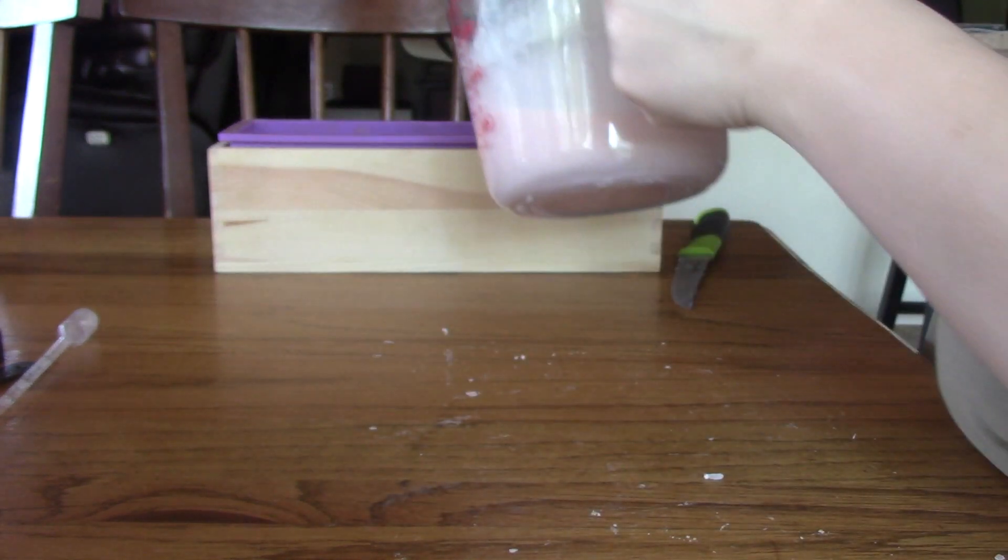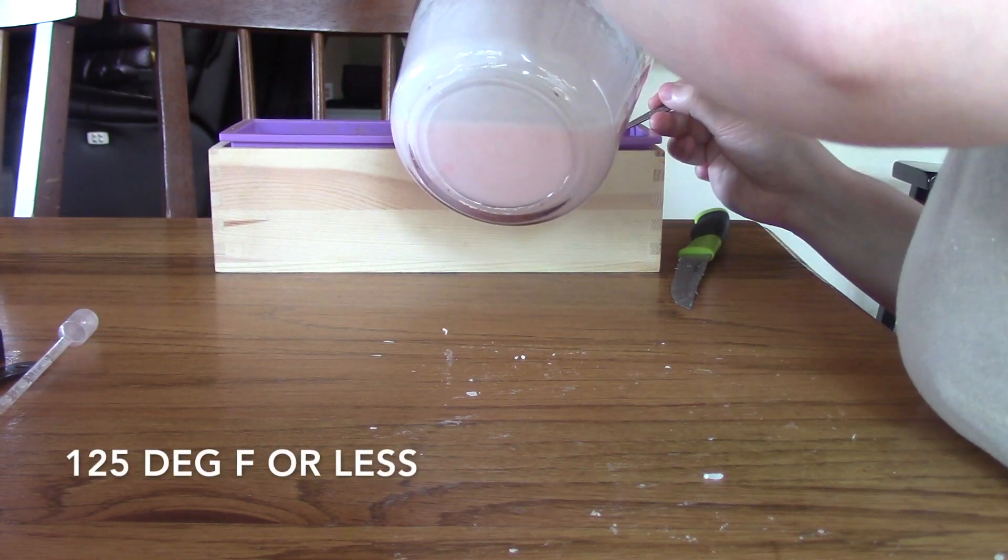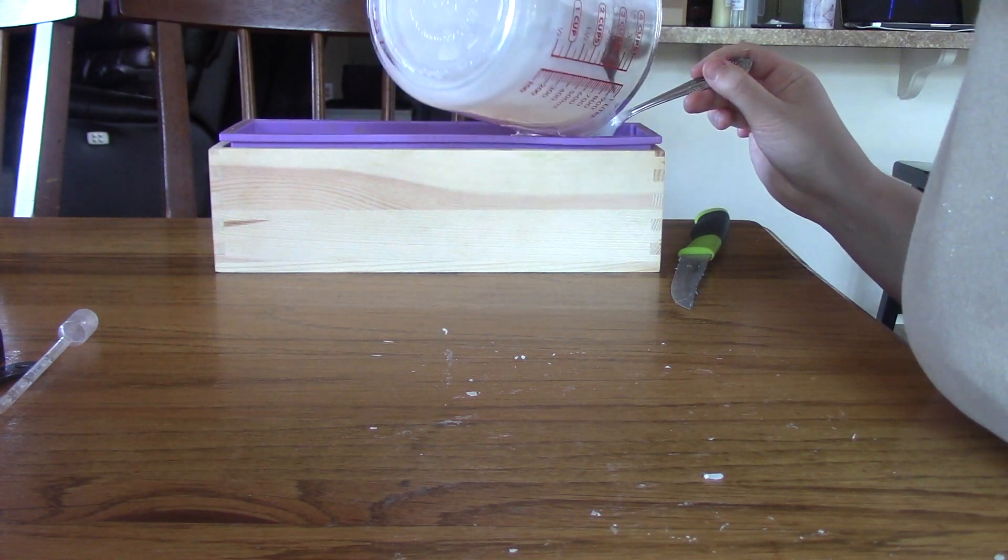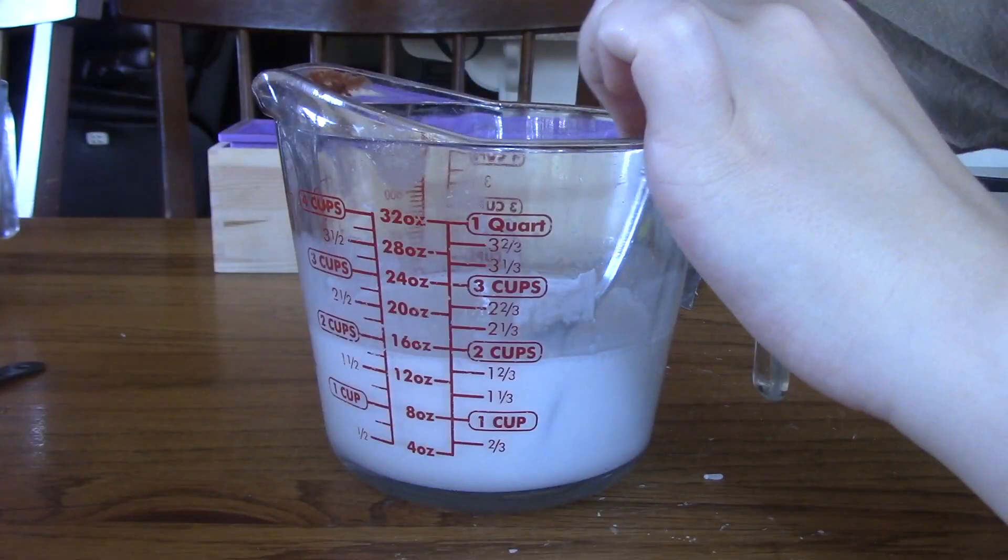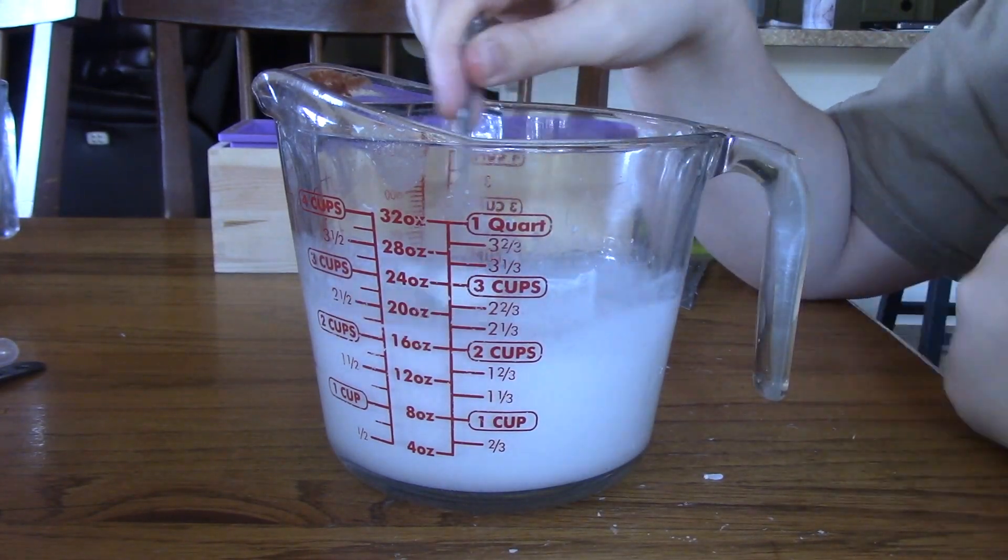You may also need to check the temperature of your orange layer to be sure that it isn't too hot whenever you pour. Next, we're going to do our white layer. Since we don't have a color to add, I immediately added the fragrance and then set it aside.